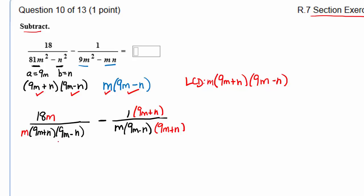The only thing you have to watch at this point is maybe some sign errors. We're going to have to distribute this negative one through the second fraction's numerator. So we'll have 18m from the first fraction minus 9m minus n, all over m times 9m plus n times 9m minus n. Just keeping the same common denominator but subtracting the numerators.